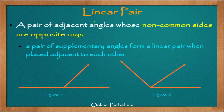Now let us learn about what we mean by a linear pair or a linear pair of angles. According to the mathematical definition, a linear pair is a pair of adjacent angles whose non-common sides are opposite rays. It is very important that the non-common sides are opposite rays.